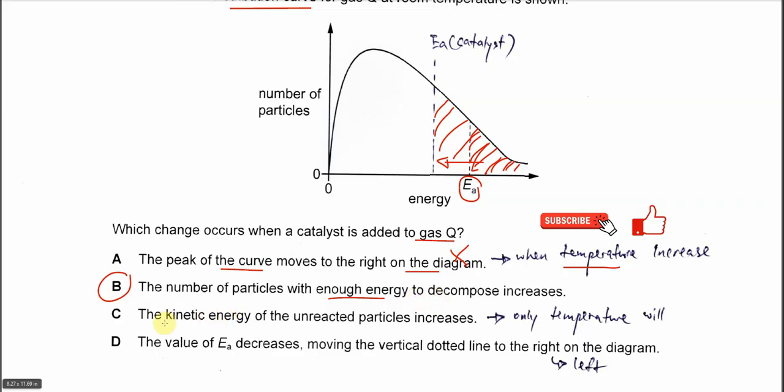Why C cannot use? The kinetic energy of the unreacted particles increases. This one is again temperature. The kinetic energy of the particles is always affected by the temperature. Higher temperature then the kinetic energy is more.